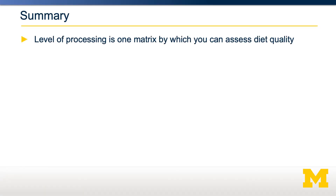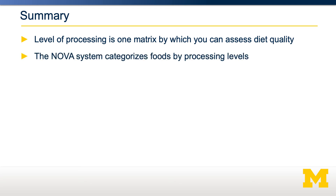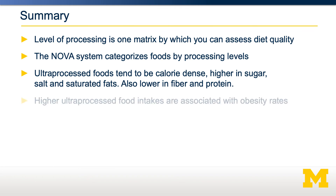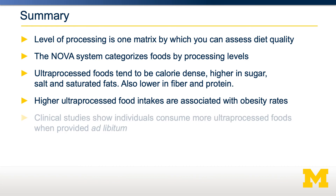In summary, there are a number of different ways by which you can assess diet quality. In this video, we went through one way, which is food processing. The NOVA system is a useful system for categorizing foods based on their level of processing. Ultra-processed foods tend to have the properties of being more calorie dense, higher in sugar, salt, and saturated fats, but low in fiber and protein. As such, higher ultra-processed diets tend to be associated with obesity rates. We also went through one short-term clinical study showing that when given unrestricted access to ultra-processed foods, people tend to consume more calories than when provided with unprocessed foods.